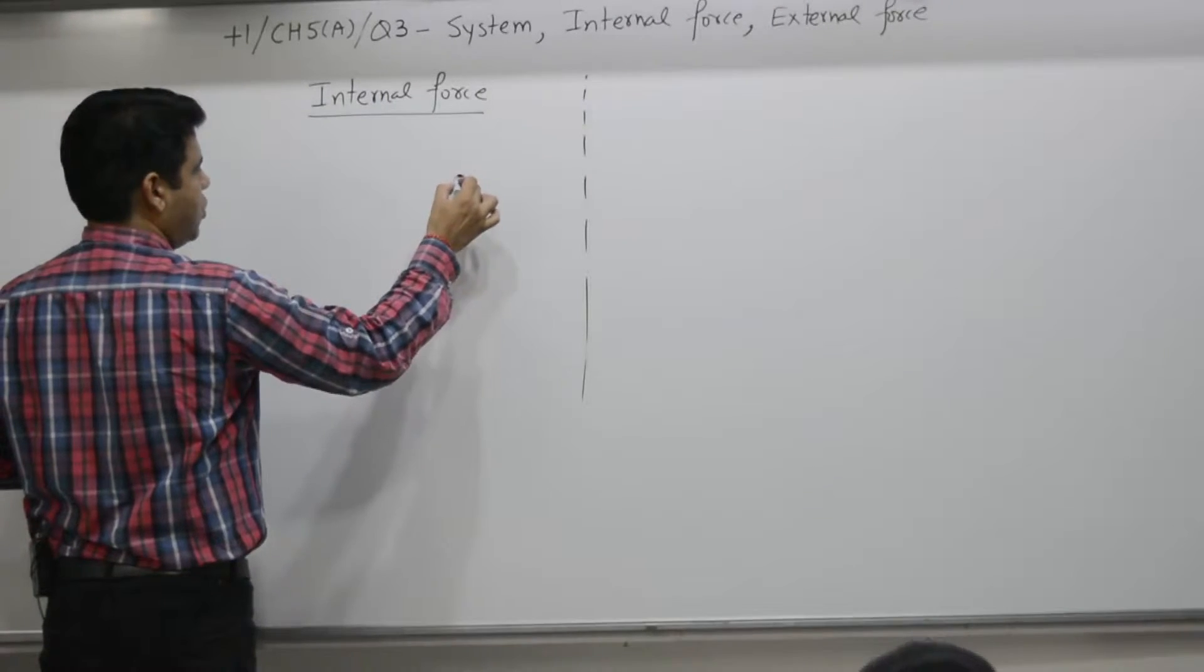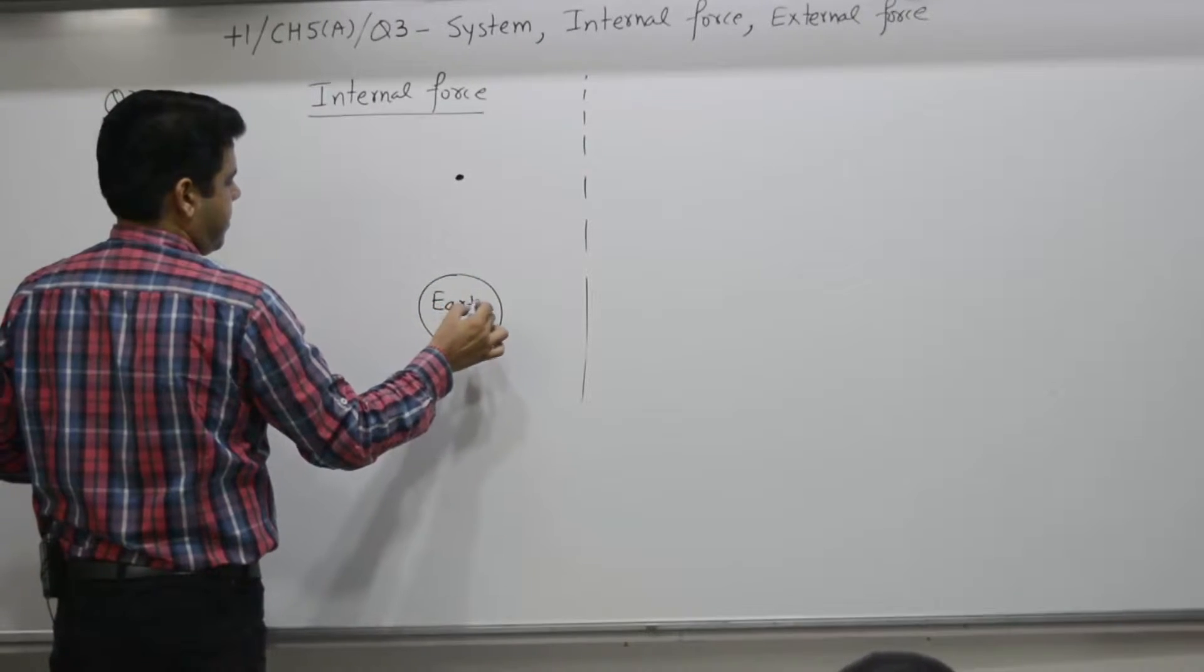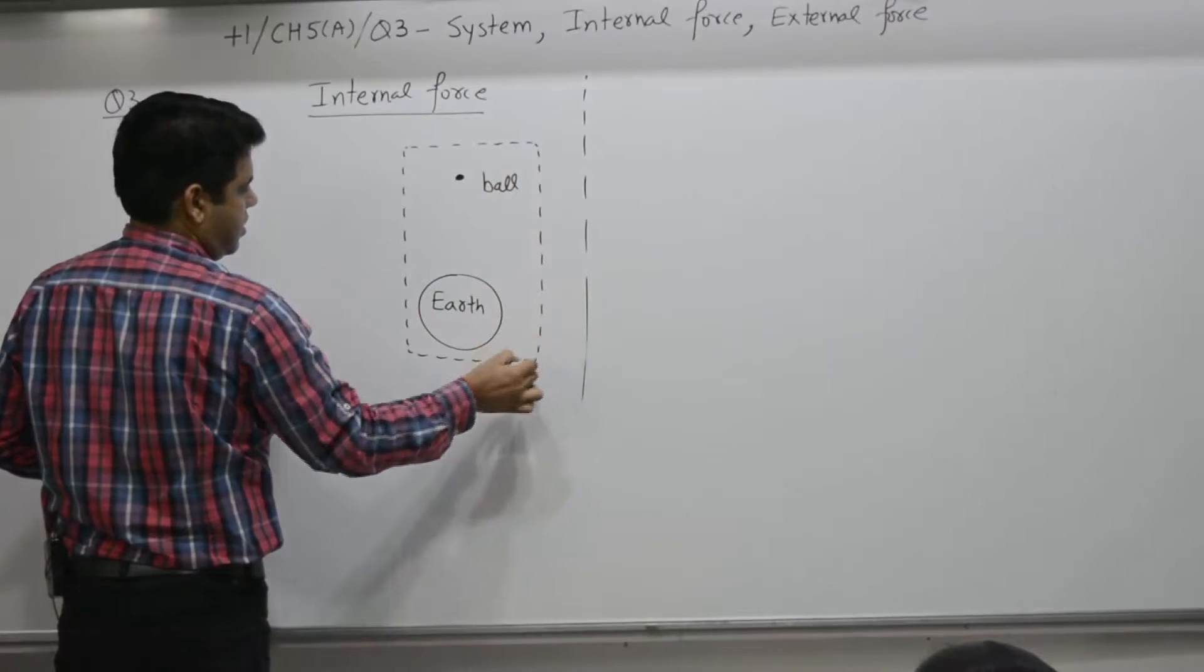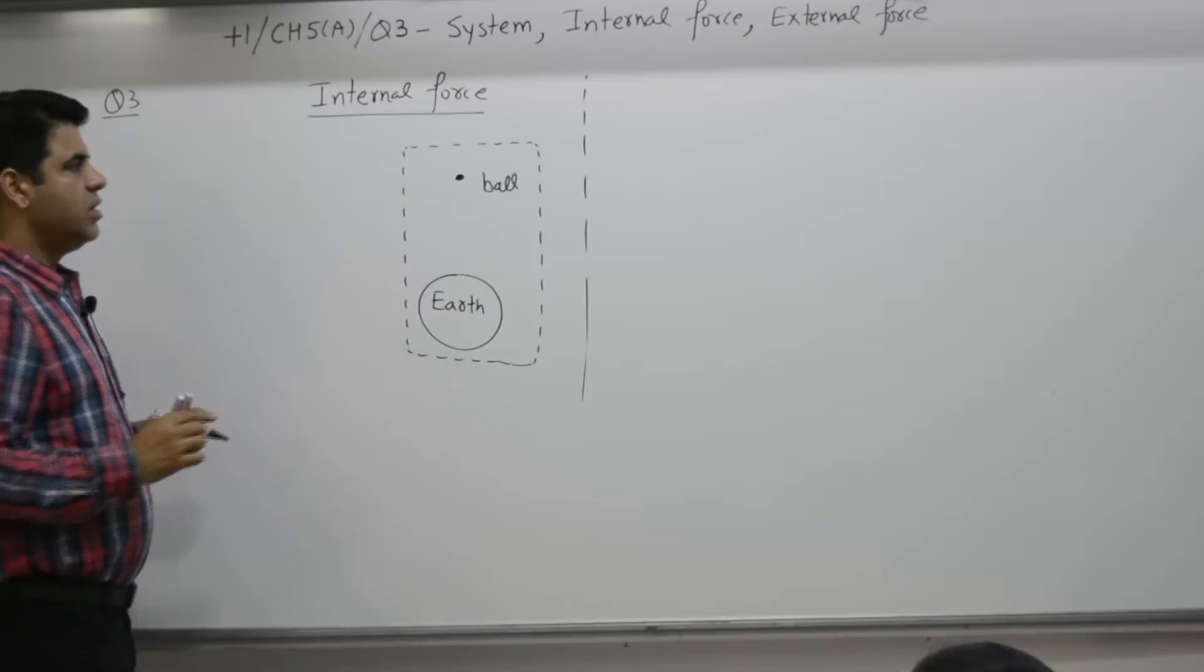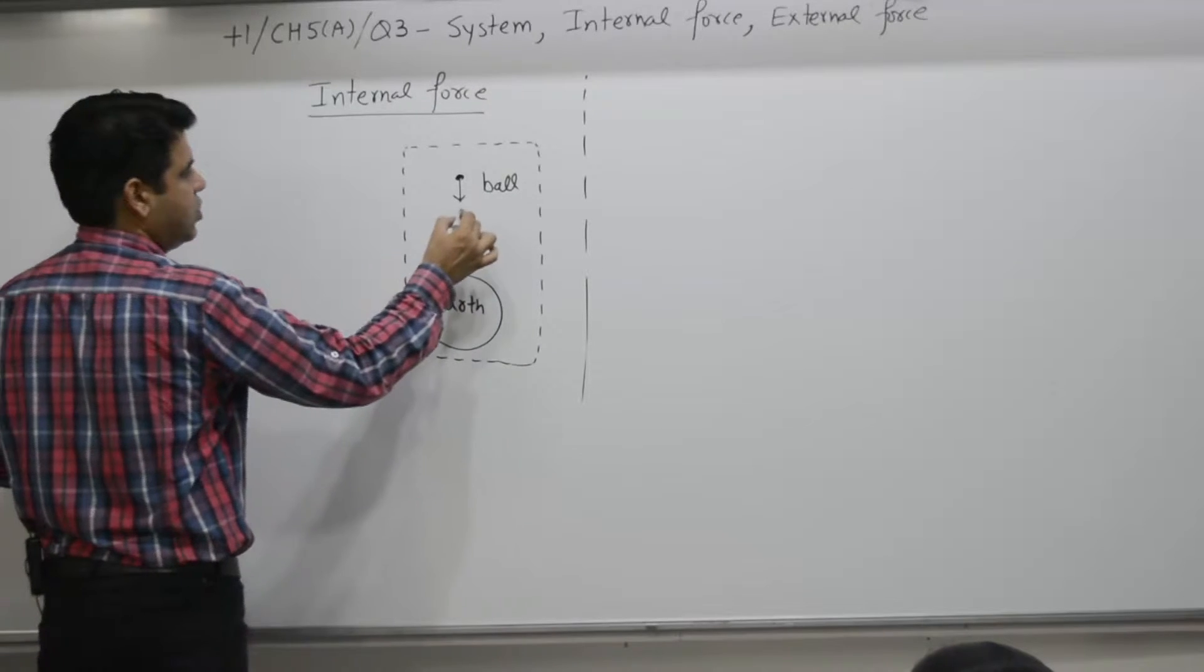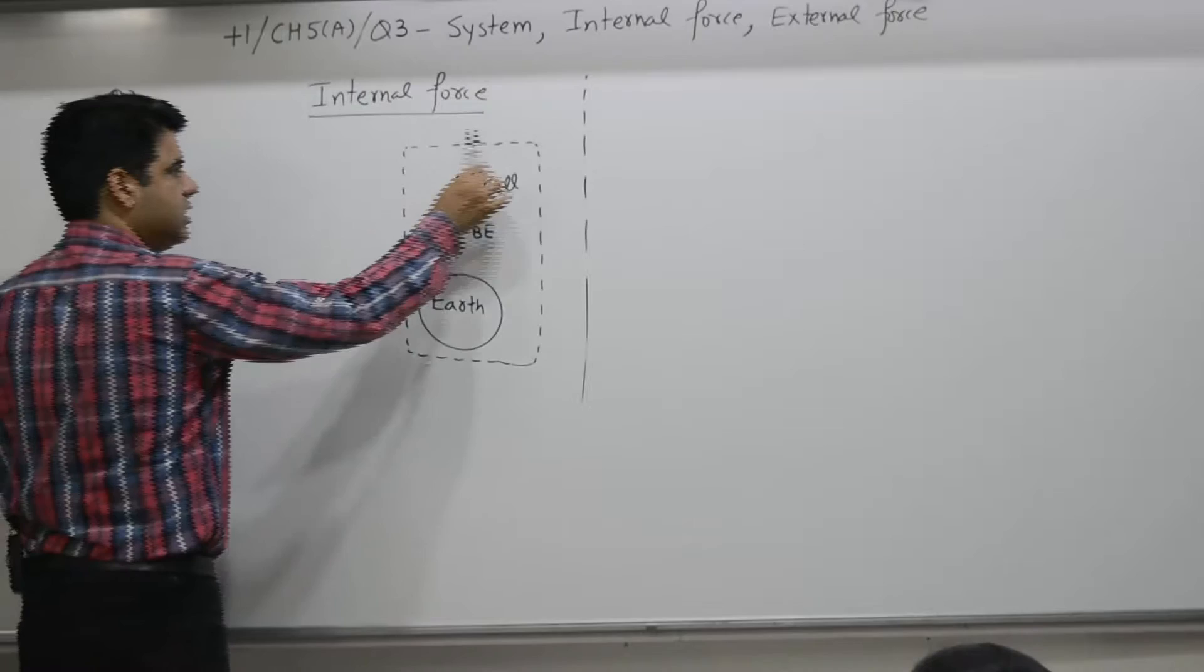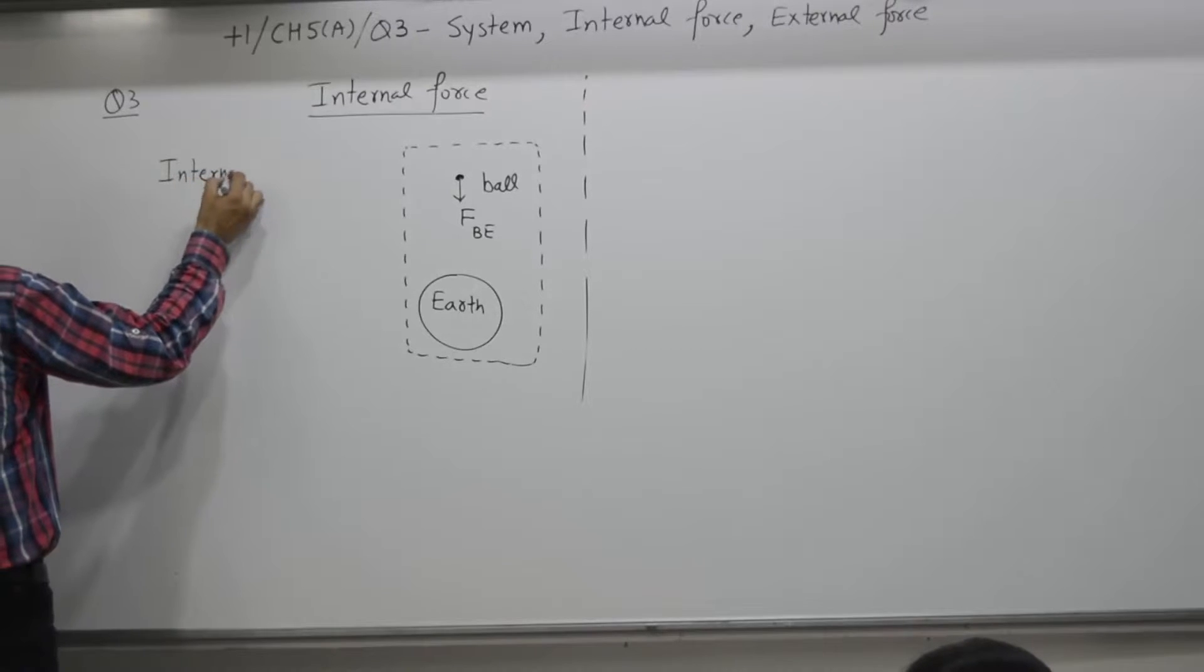For example, if you analyze a ball and earth, if you analyze ball and earth as a system, the observer decides to study two objects only. The ball is under a force due to earth. Force on ball due to earth. The source of this force is earth. Earth is within this system, so this type of force is known as internal force.